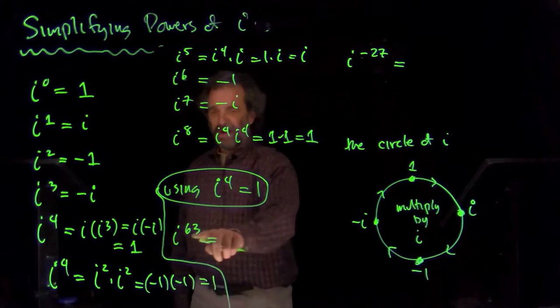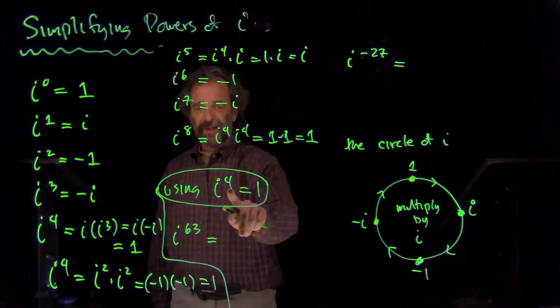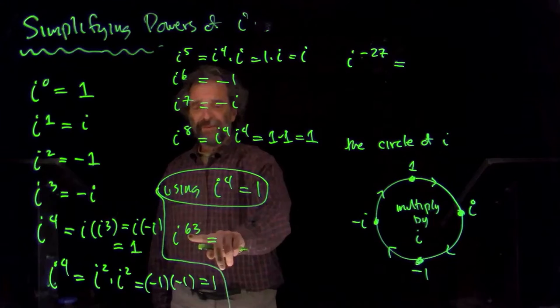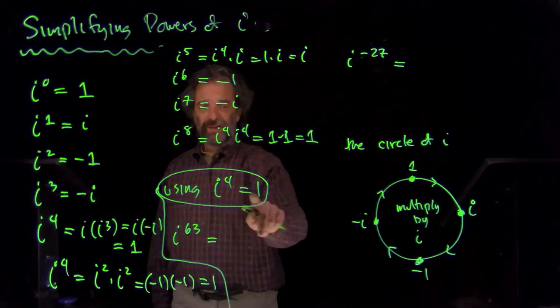So, if I want to figure out, say, i to a giant power, I just factor out as many i to the fourths as I can. So, I factor as many fours out of sixty-three as I can. Each four i's is a one.